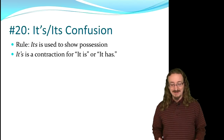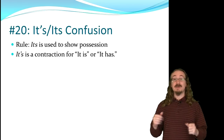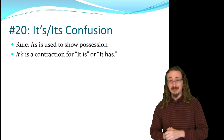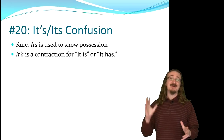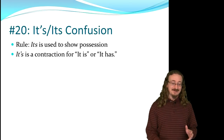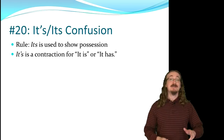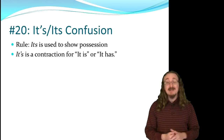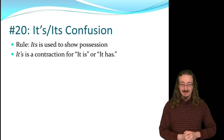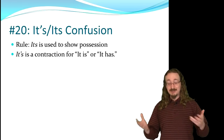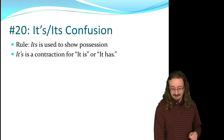We'll start in reverse order. Number 20 is the its and it's confusion problem. This one is very simple — all you have to do to see if it's going to be it's with an apostrophe or its without the apostrophe is see if you can substitute 'it is' or 'it has.' If you don't have the apostrophe, that shows possession, and if you do, it's a contraction.